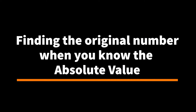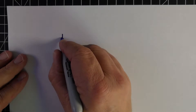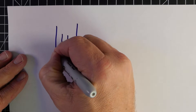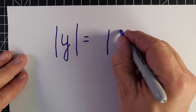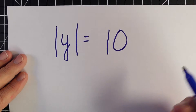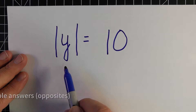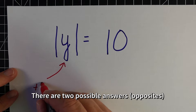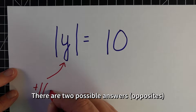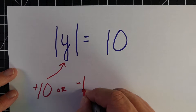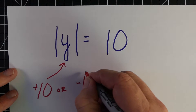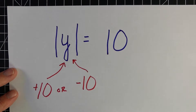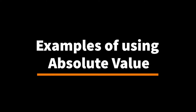Another thing that's going to come up occasionally is that inside the absolute value you're going to have a variable. So in this case, the letter Y: the absolute value of Y is equal to 10. Well, there are actually two possible answers — obviously we could have a positive 10, but we could also have a negative 10. So anytime you have a variable inside of your absolute value signs, you're going to actually have two different answers.